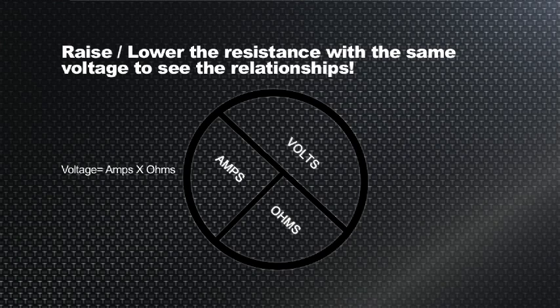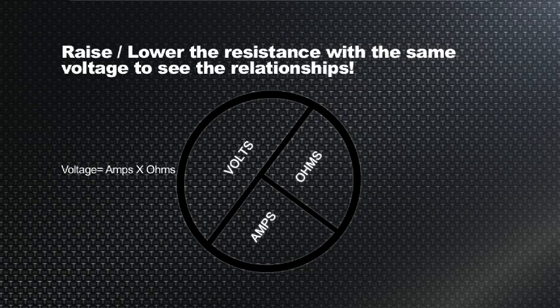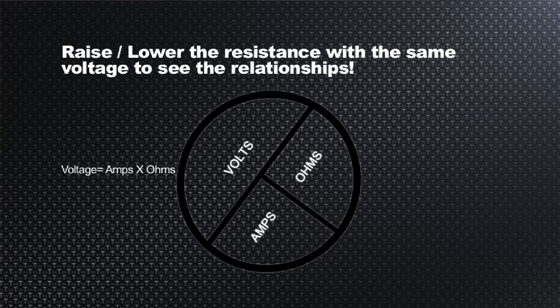And conversely, if we have the ohms go up, the resistance in the circuit go up, the current draw is going to go down if voltage is consistent.